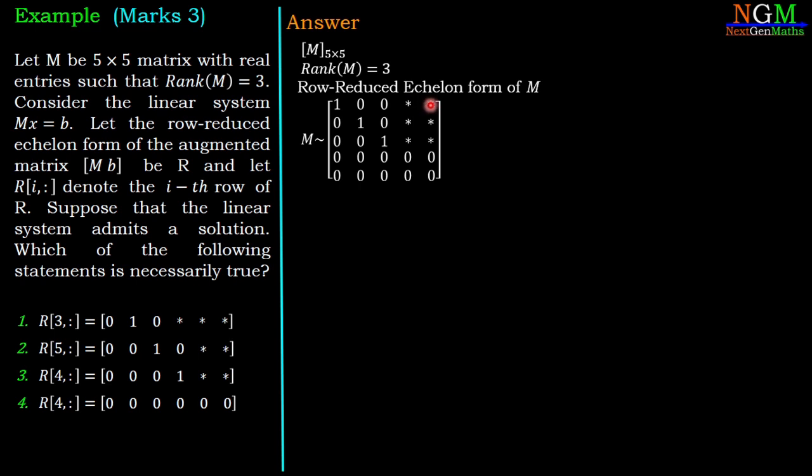...0 1 0 * *; 0 0 1 * *], where star represents any number. The last two rows must be zero because rank(M) is 3.